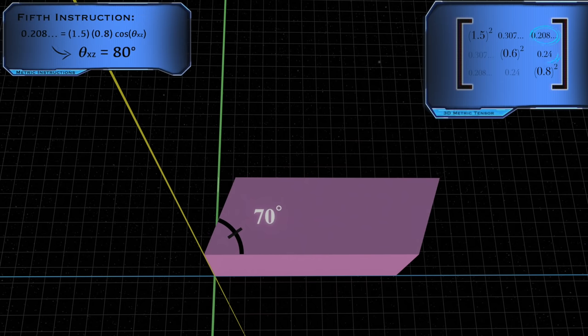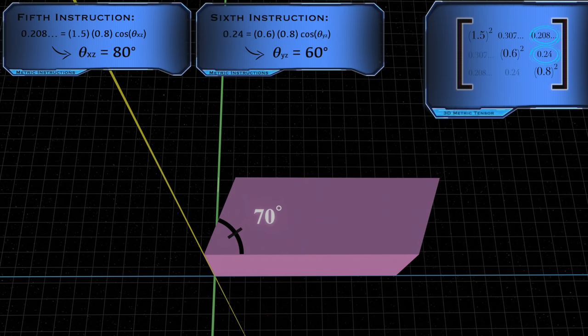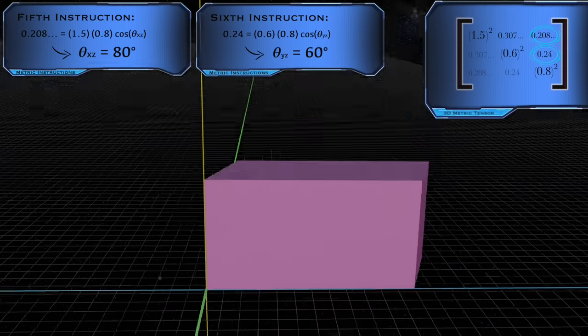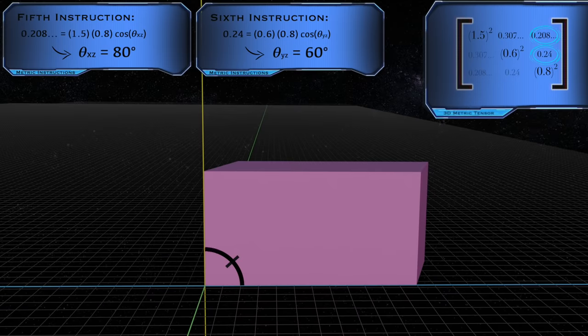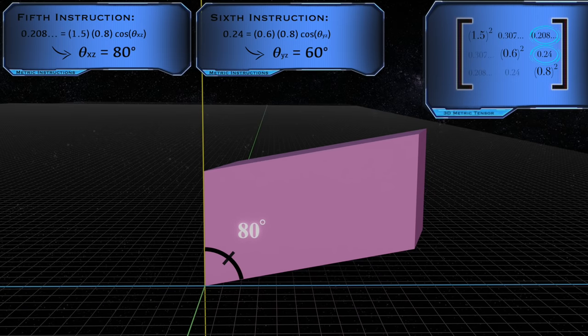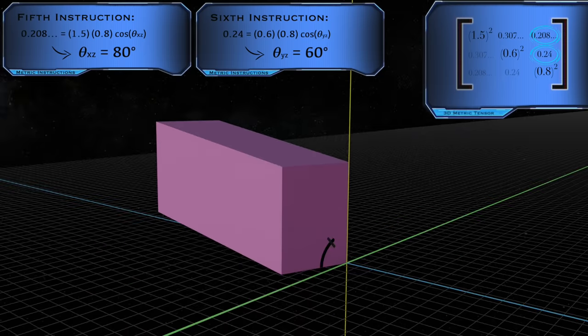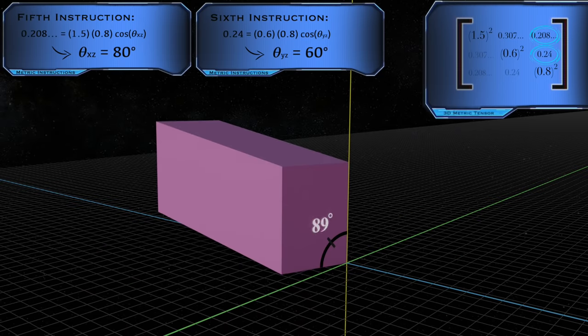Similarly, the fifth and sixth instructions tell us to make the angle between the x and z axes equal to 80 degrees, and the angle between the y and z axes equal to 60 degrees.